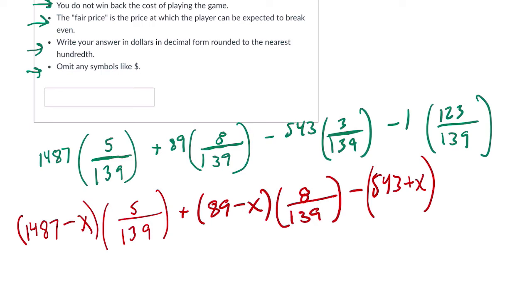But you could also write it as this, plus negative 543 minus x. Those are equivalent, right? So write whichever one makes sense to you. Probably this one does. You lose 543, and you lose the amount you pay. But I'm going to write it as I have it here. It just looks a little bit cleaner to me. 543 times 3 over 139. And then, we subtract 1 plus x times, I'm running out of room, 123 over 139.